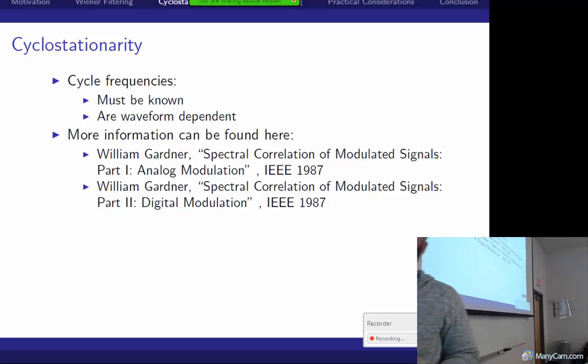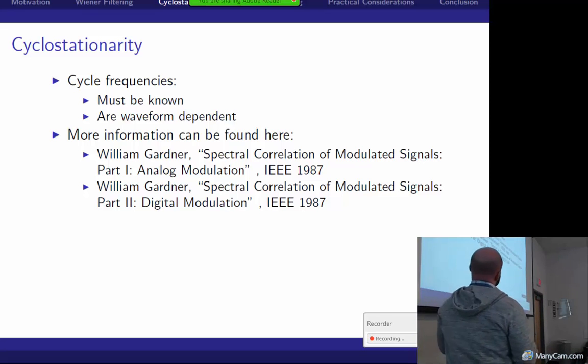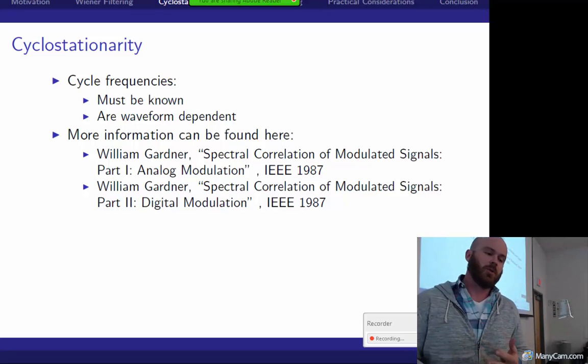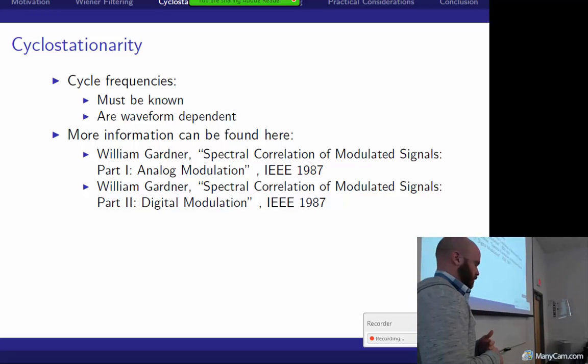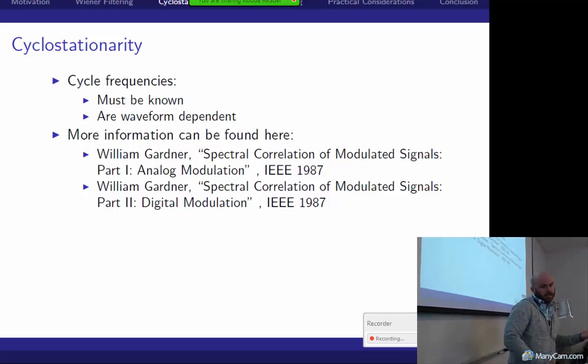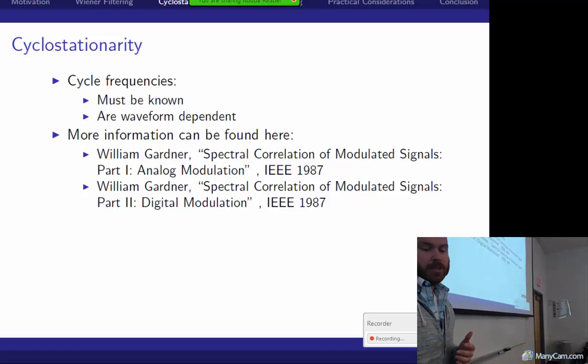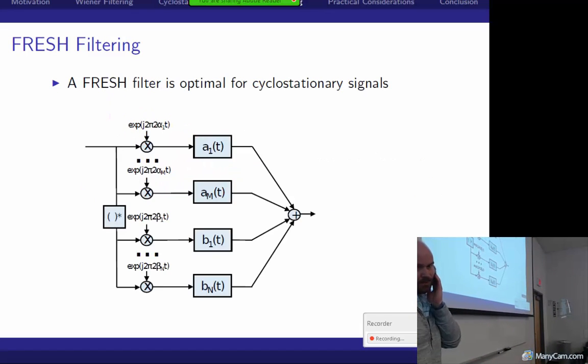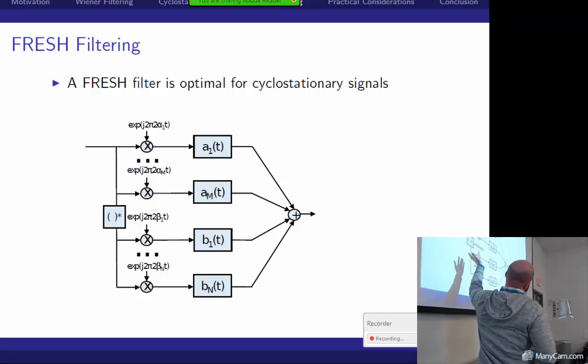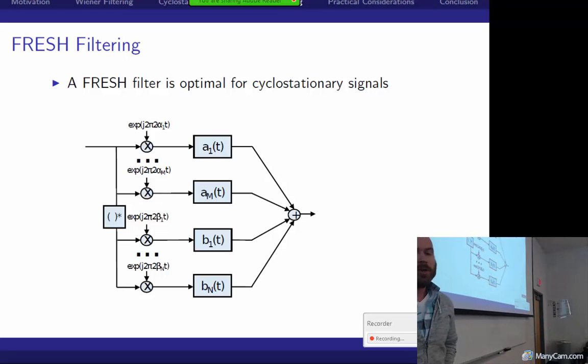So we talked a little bit about what the cycle frequencies are for BPSK. What about other waveforms? So if you want to build a fresh filter for this, you need to know what the cycle frequencies are and they're waveform dependent. So if you go dig out to William Gardner's papers, they pretty much describe any signal carrier waveform I can think of. They give you what their cycle frequencies are and how well the signal correlates with itself. So what does the fresh filter structure look like that can incorporate this spectral redundancy? So it looks something like this, which is you have some frequency mixers on the front end and then you put it through a filter and then sum all of them up afterwards.